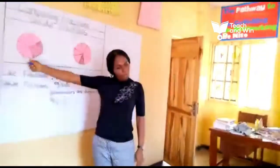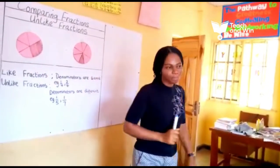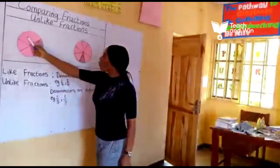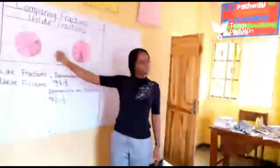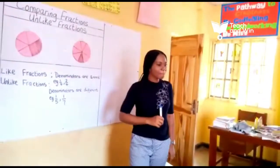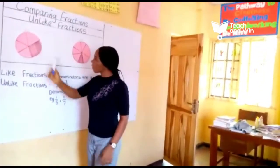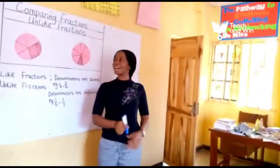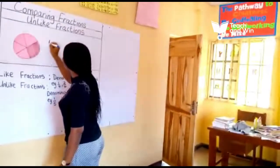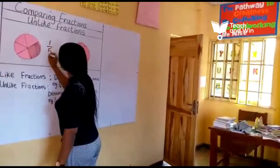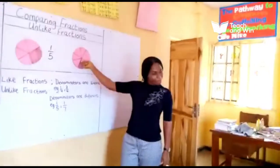Wow! These two beautiful circles are divided into different parts. Can we count this circle? Let's count how many parts it is divided into: one, two, three, four, five. I divided this circle into five parts, and I shaded one part. What this means is that this circle is the fraction one over five — one fifth.